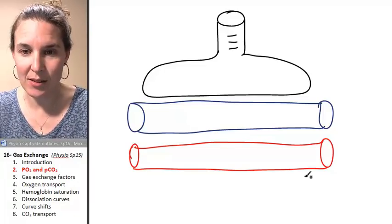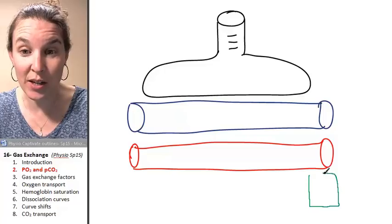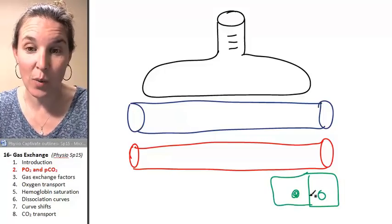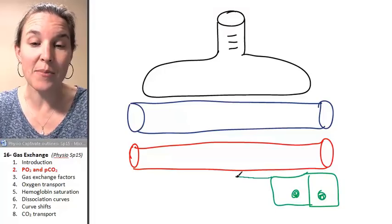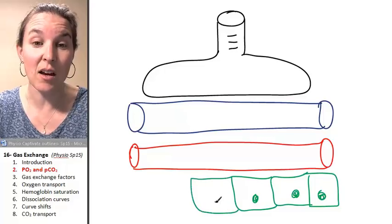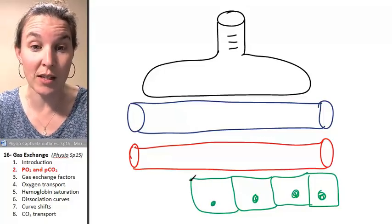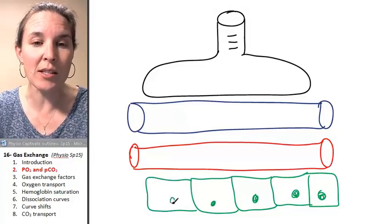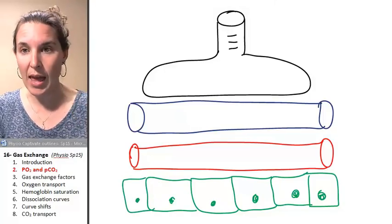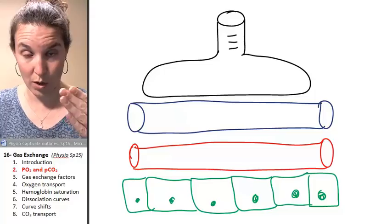So as we already know, because we dealt with the concept of capillary exchange, we know that every single cell has to be within diffusion's distance of a capillary, or the cell is going to die. So you can imagine this little red vessel here is a capillary.